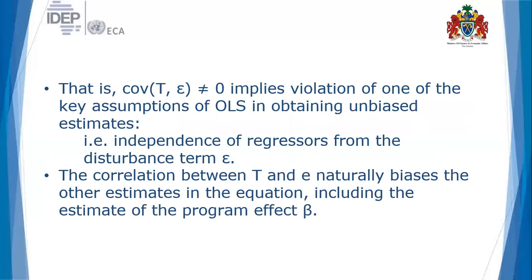The covariance between the treatment dummy variable T and the error term is not zero, which means there is interaction between T and the error term. This violates a key assumption of ordinary least squares in obtaining unbiased estimates — specifically, the assumption of independence of regressors from the error term. This correlation naturally biases estimates in the equation, including the estimate of the program effect beta.